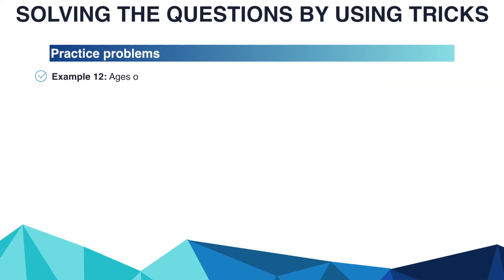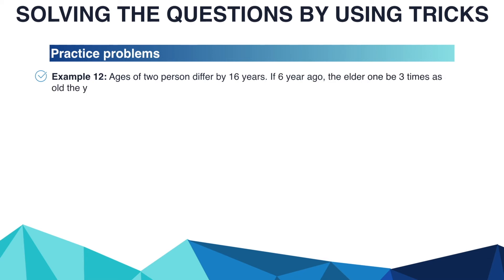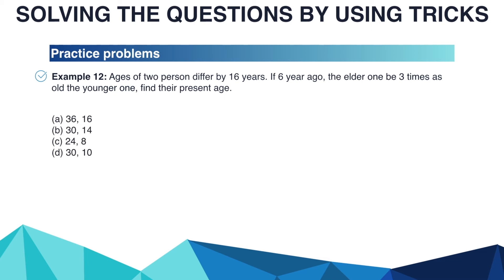Another example: the ages of 2 persons differ by 16 years. If 6 years ago the elder one was 3 times as old as the younger one, find their present ages. Options are A: 36 and 16, B: 30 and 14, C: 24 and 8, D: 30 and 10.